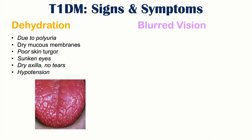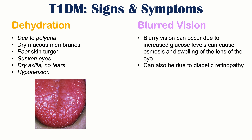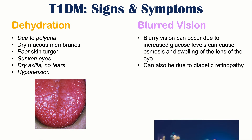Patients with type 1 diabetes can also experience blurred vision. The blurry vision can be due to increased glucose levels causing osmosis and swelling of the lens of the eye, or it can also be due to diabetic retinopathy, which is a complication of longstanding diabetes.